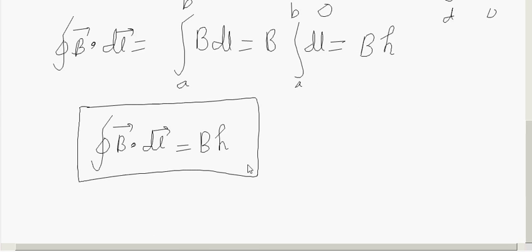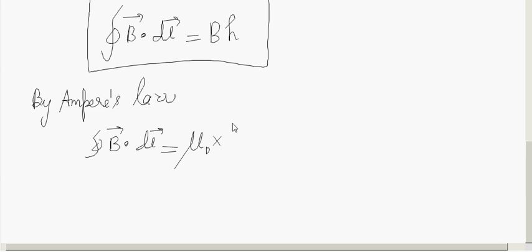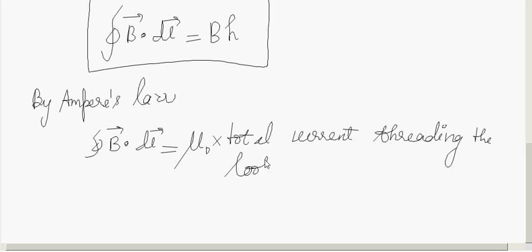So finally, we got line integral of B dot dl as Bh. Now, we will apply Ampere's law, Ampere's circuital law. Ampere's law: line integral of B dot dl is equal to μ₀ times the total current threading the loop. So I can write it as μ₀ into current enclosed, IE, where IE is the current enclosed in the solenoid loop.